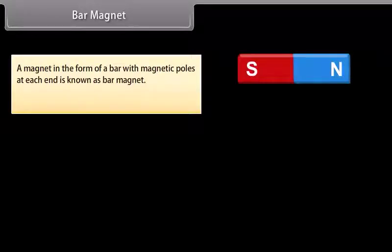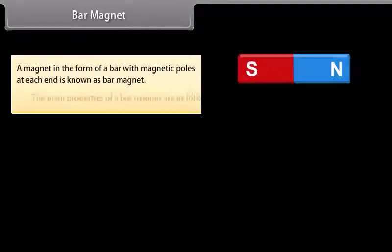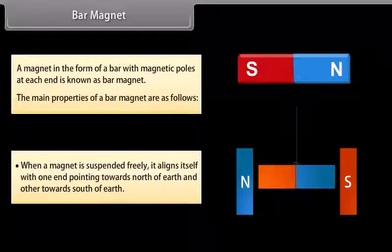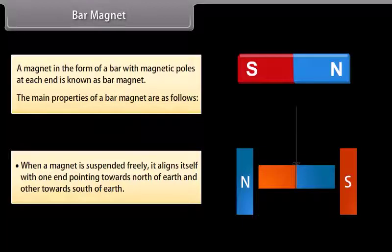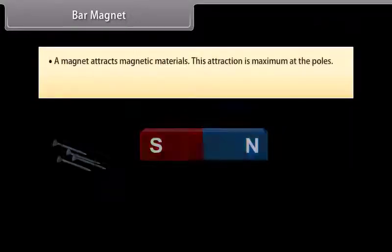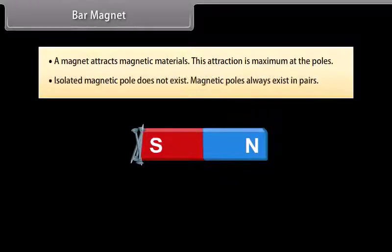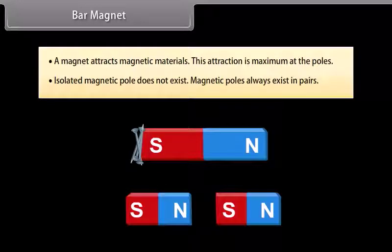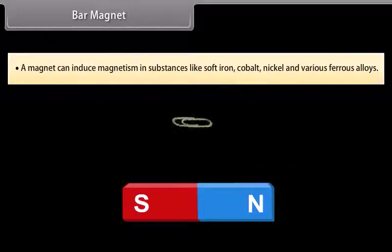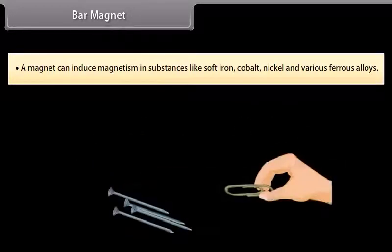A magnet in the form of a bar with magnetic poles at each end is known as a bar magnet. The main properties of a bar magnet are as follows: When a magnet is suspended freely, it aligns itself with one end pointing towards north of Earth and other towards south. Unlike poles attract and like poles repel each other. A magnet attracts magnetic materials, and this attraction is maximum at the poles. Isolated magnetic poles do not exist; magnetic poles always exist in pairs. A magnet can induce magnetism in substances like soft iron, cobalt, nickel, and various ferrous alloys.